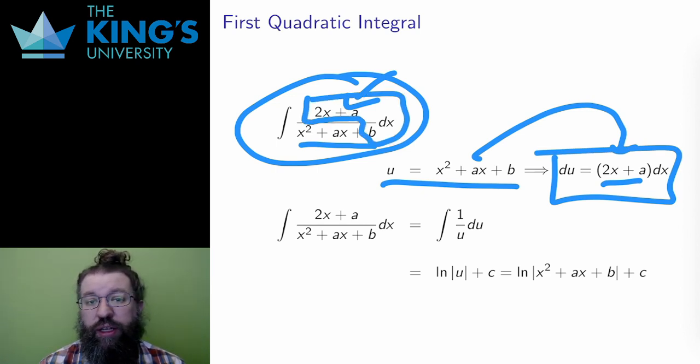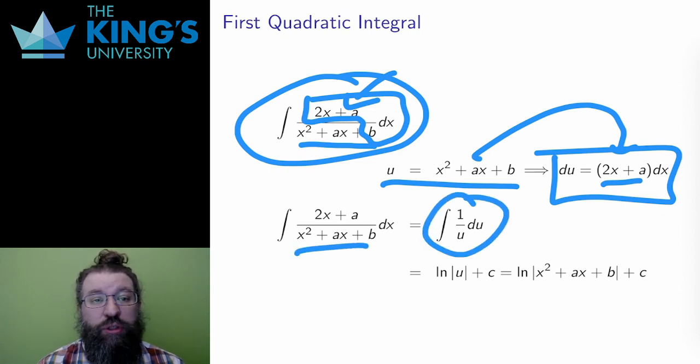This means that the entire numerator can be replaced with du, and the denominator with u. And then the result is a logarithm integral again. The antiderivative is the natural logarithm of the absolute value of u plus c.